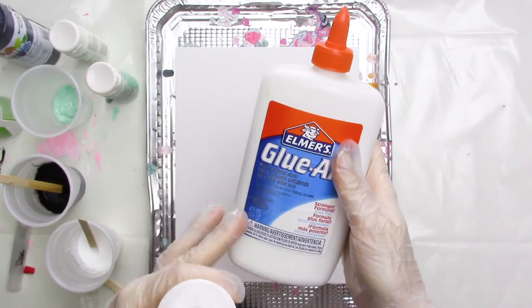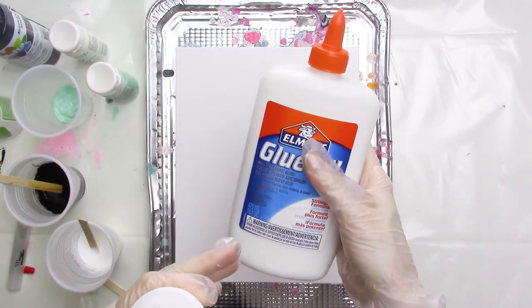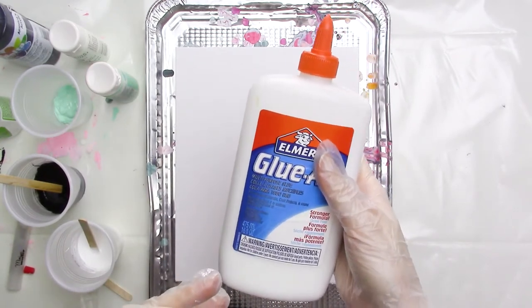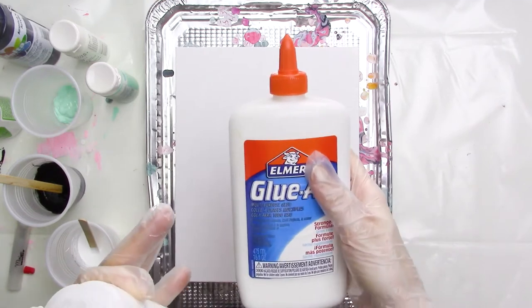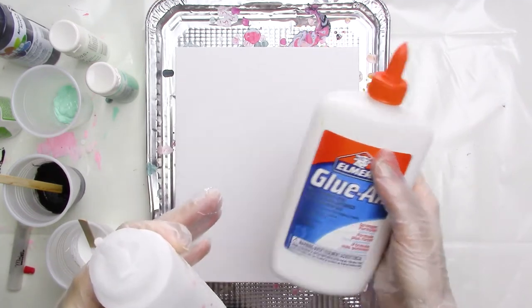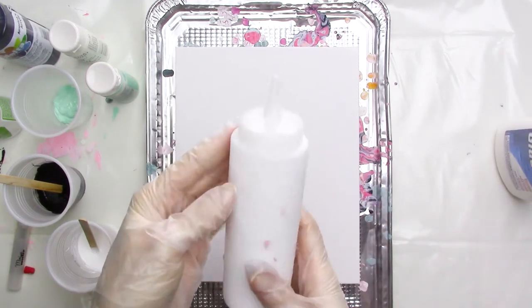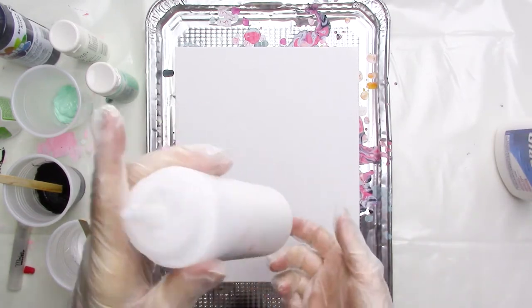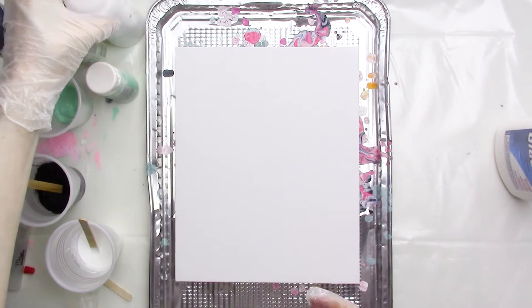My pouring medium is a one-to-one mixture of Elmer's glue and water, and I mix about a tablespoon or so of the paint with about the same amount of pouring medium, enough that the paint becomes the consistency of buttermilk. I'm using about double the amount of white paint, which I do a lot because I tend to like a lot of white in my paintings.